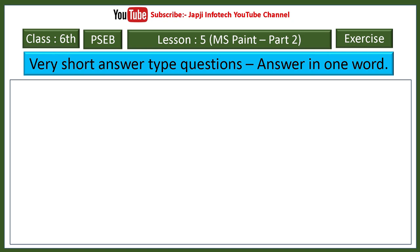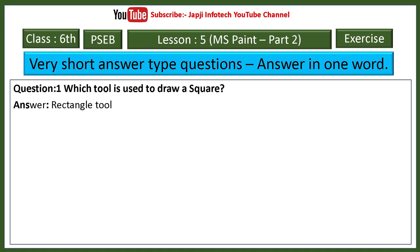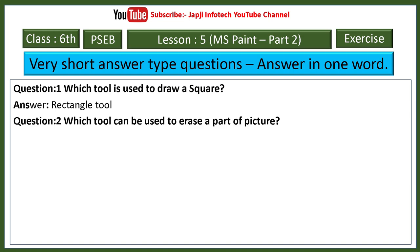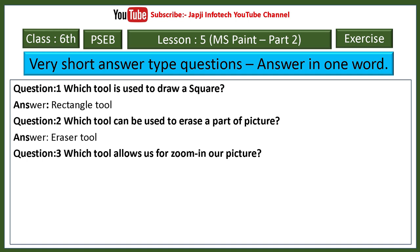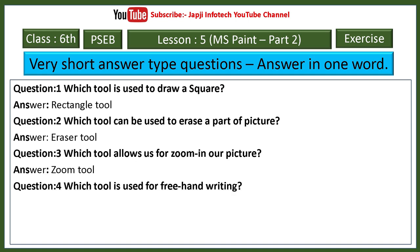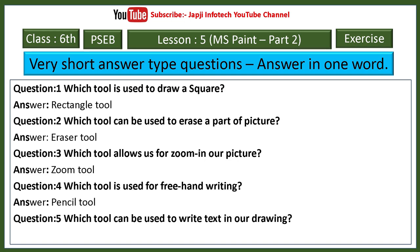Very short answer questions in lesson five. Rectangle tool is used to draw a square. Eraser tool can be used to erase a part of a picture. Zoom tool allows us to zoom in on a picture. Pencil tool is used for freehand drawing. Text tool can be used to write text in a drawing.